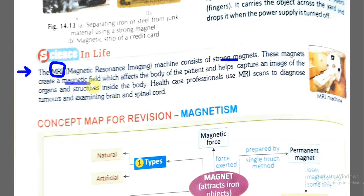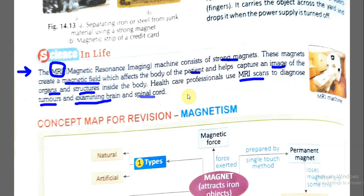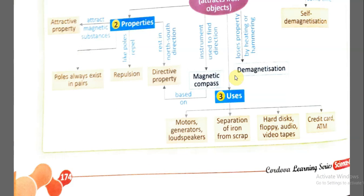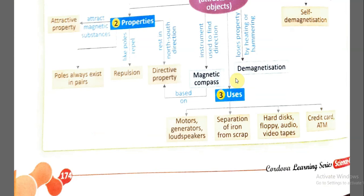The magnets in the MRI machine create a magnetic field from which we can take images of different parts of the patient's body — photos of their organs and study the internal structure. Health care professionals use MRI scans to diagnose tumors and examine the brain and spinal cord. The MRI machine is one where a person lies inside and is moved inward. This concludes our chapter on magnetism.